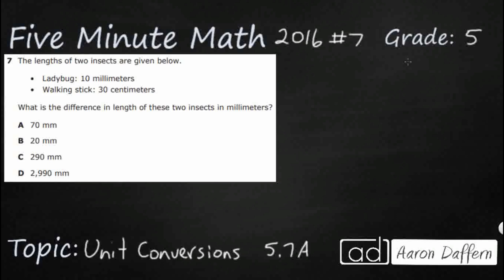So we have the length of two insects. We've got a ladybug at 10 millimeters and a walking stick at 30 centimeters. We need to find the difference. The difference is the answer to a subtraction problem. So we just need to subtract 10 millimeters and 30 centimeters, but we need to do that in millimeters.